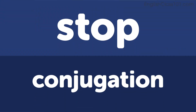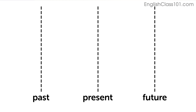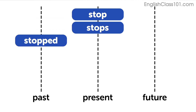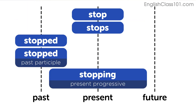Now let's look at the conjugations of this verb. Present: stop, stops. Past: stopped. Past participle: stopped. Progressive: stopping.